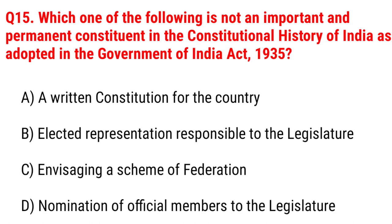Next question: which one of the following is not an important and permanent constituent in the history of India as adopted in the Government of India Act 1935? Option A, a written constitution for the country; B, elected representation responsible to the legislature; C, envisaging a scheme of federation; D, nomination of official members to the legislature. The right answer is Option A, a written constitution for the country.